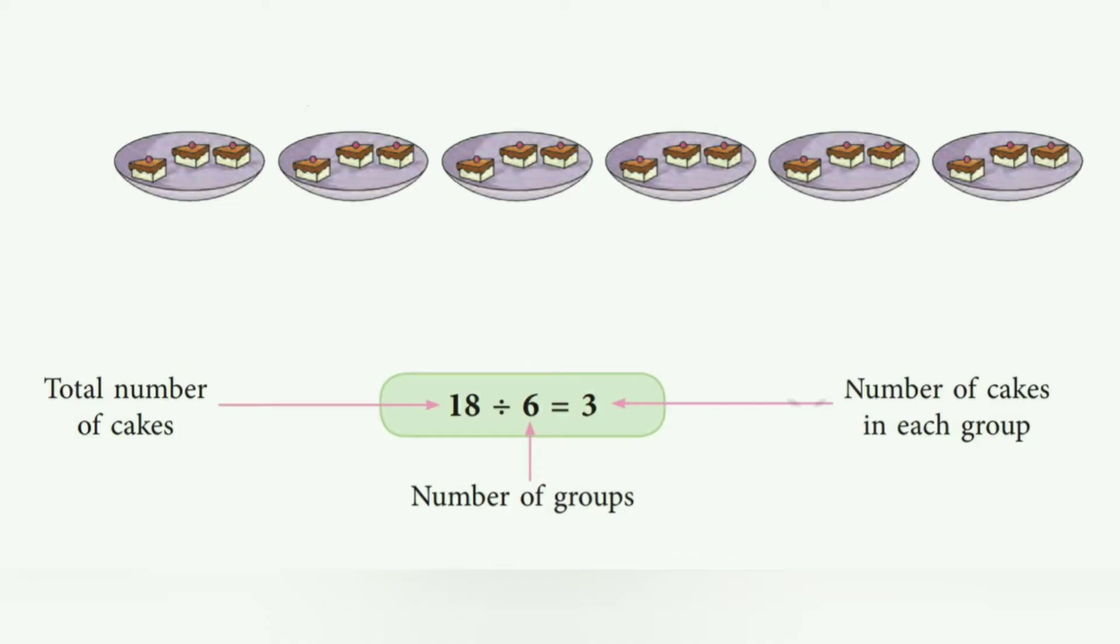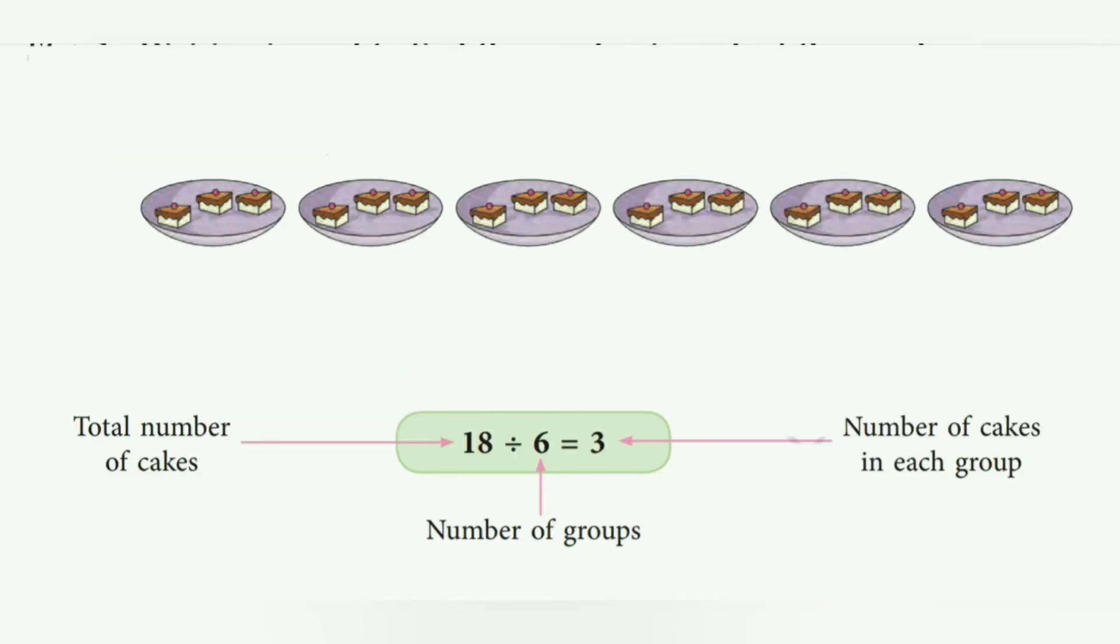Let's see some more examples. Equal grouping division is equal grouping. Suppose you have 18 cakes and you want to make six equal groups. What to do? Take six plates, put equal number of cakes on each plate. So how many groups have you made? We can see number of groups are 6. How many cakes are there in each group?